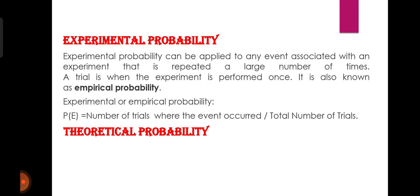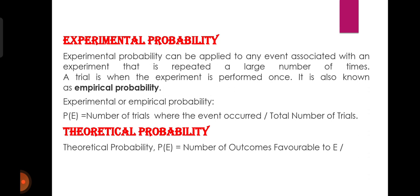इसमें दूसरा आता है theoretical probability. Theoretical probability का formula है: P(E) is equal to number of outcomes favorable to E divided by number of all possible outcomes of the experiment. कोई भी experiment आपके द्वारा follow किया जा रहा है, उसमें जो total number of possible outcomes हैं उसको count करेंगे, और जो outcomes E के favor में हैं उसको divide कर देंगे total number of possible outcomes से। इस तरह से हमें उस particular event के occur होने की probability पता चल जाती है।